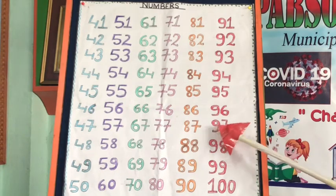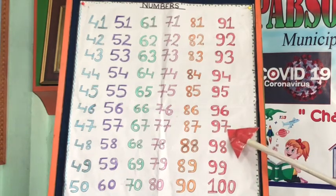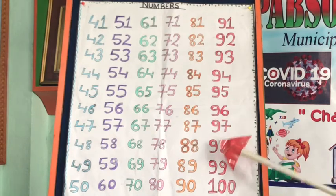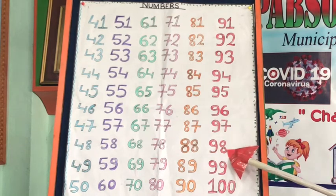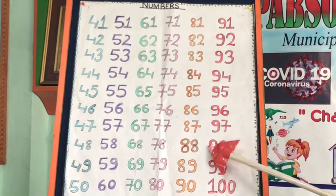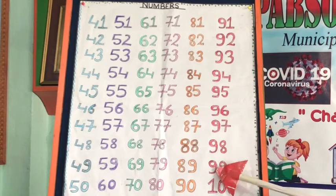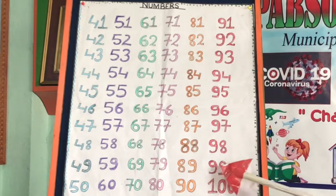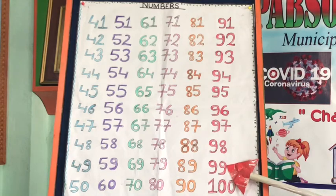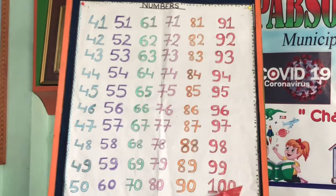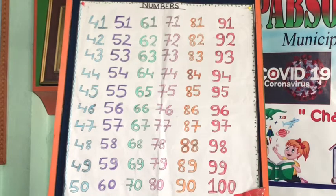97, 97, 98, 98, 99, 99, and the last one is 100, 100. Now let's revise once again.